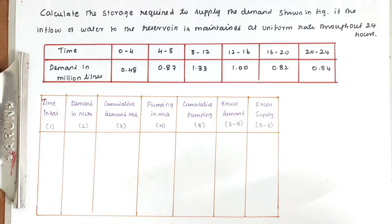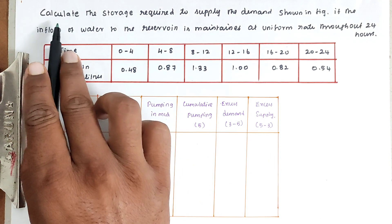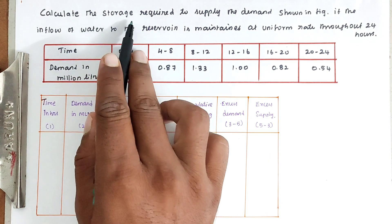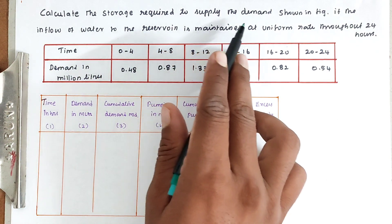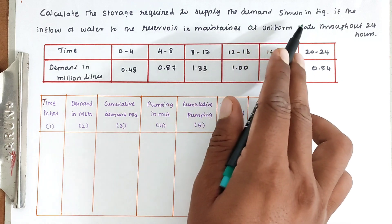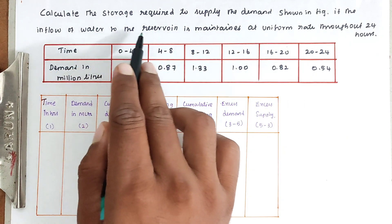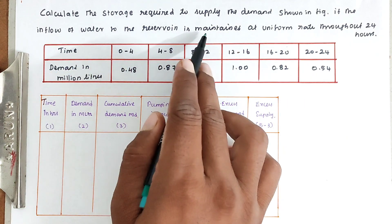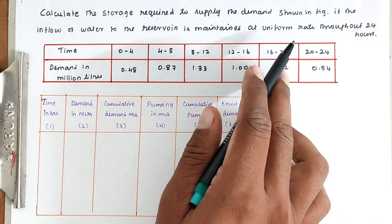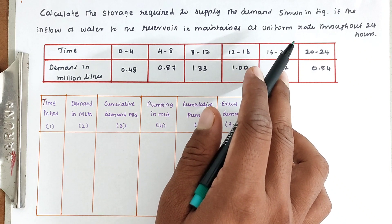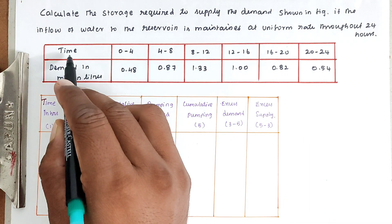Hello friends, welcome to Civil Engineering Exam. Today we are going to see a problem related to water supply engineering in the topic of distribution systems. The problem is: calculate the storage required to supply the demand shown in figure, if the inflow of water to the reservoir is maintained at a uniform rate through 24 hours.